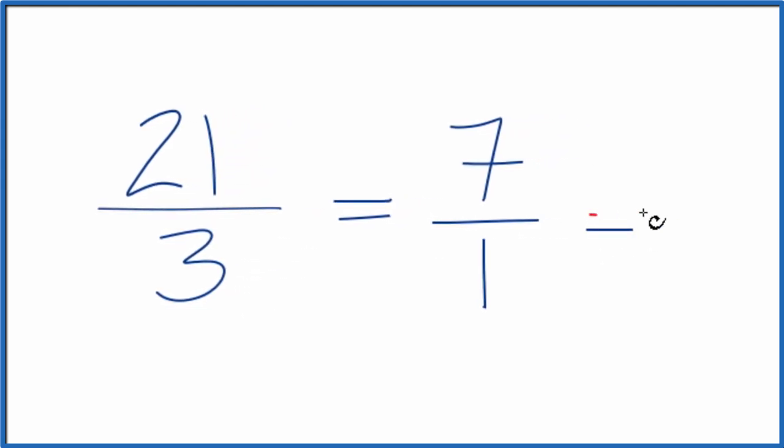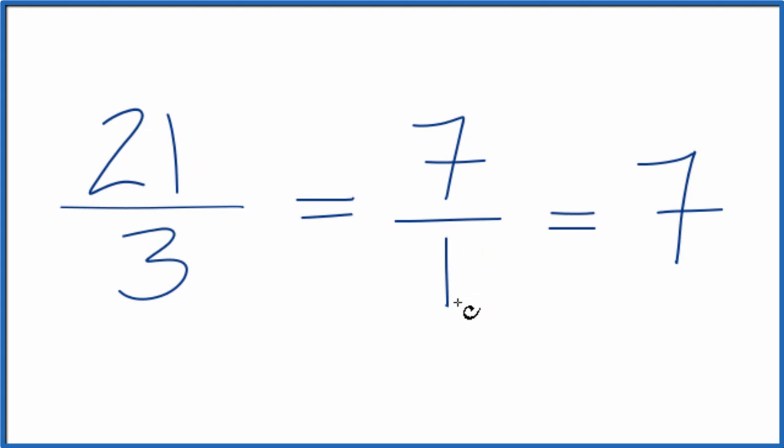You could also just put 7 here, because 7 divided by 1 is 1, so you could just put a whole number. Do note that 21 over 3 is an improper fraction, so you could change it to a mixed number. Just divide the 21 by 3, and that would get you directly to this whole number 7.